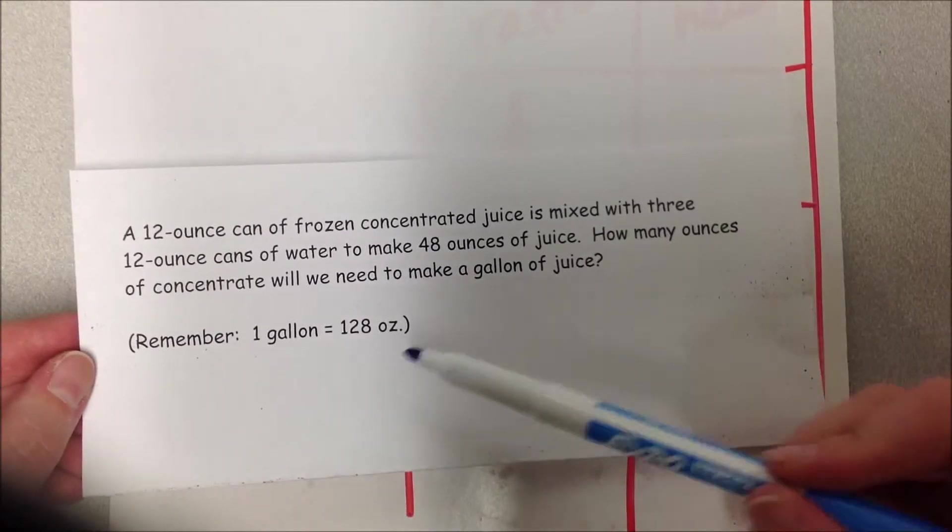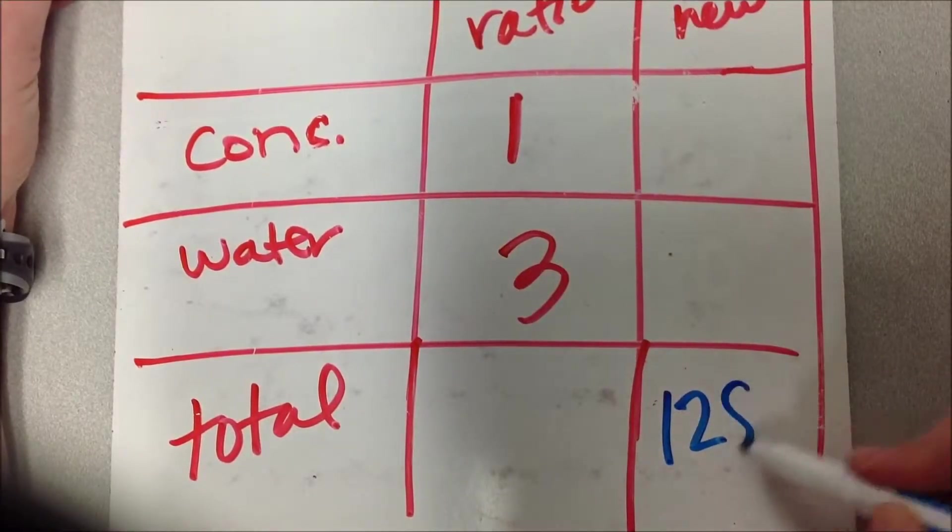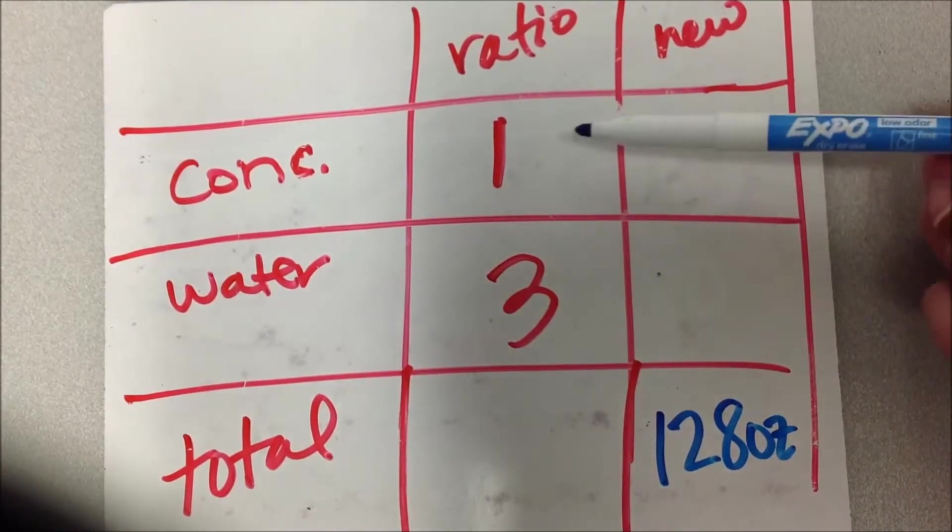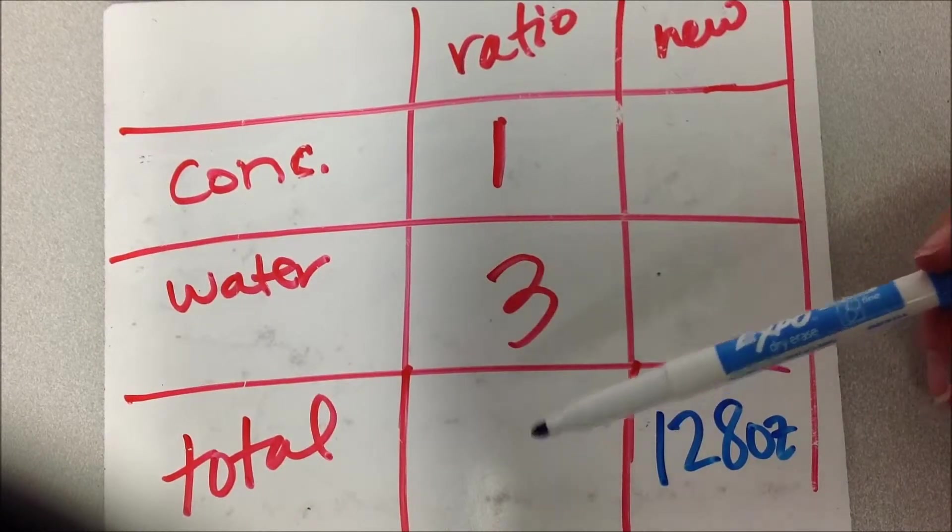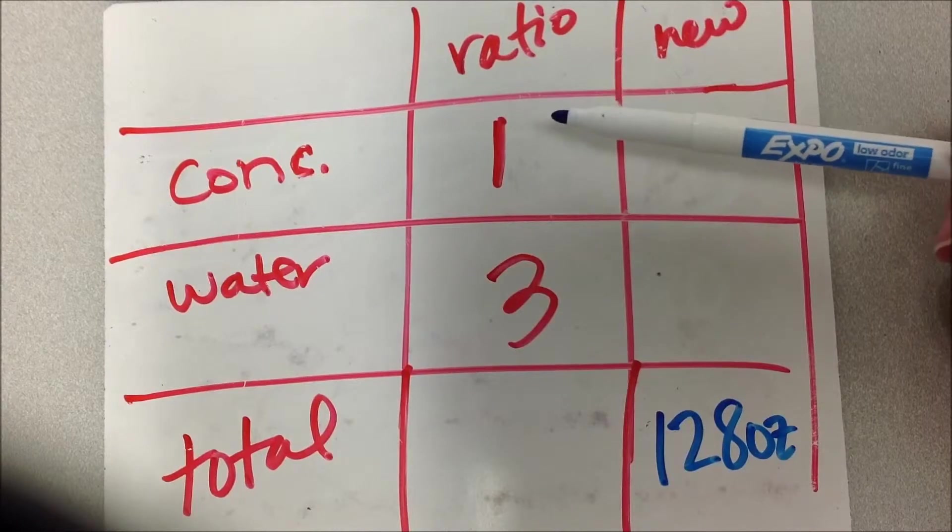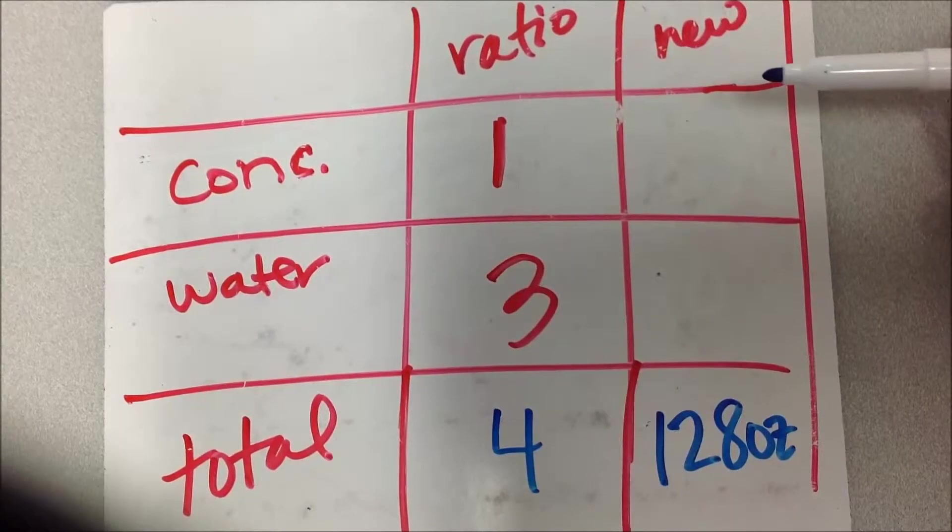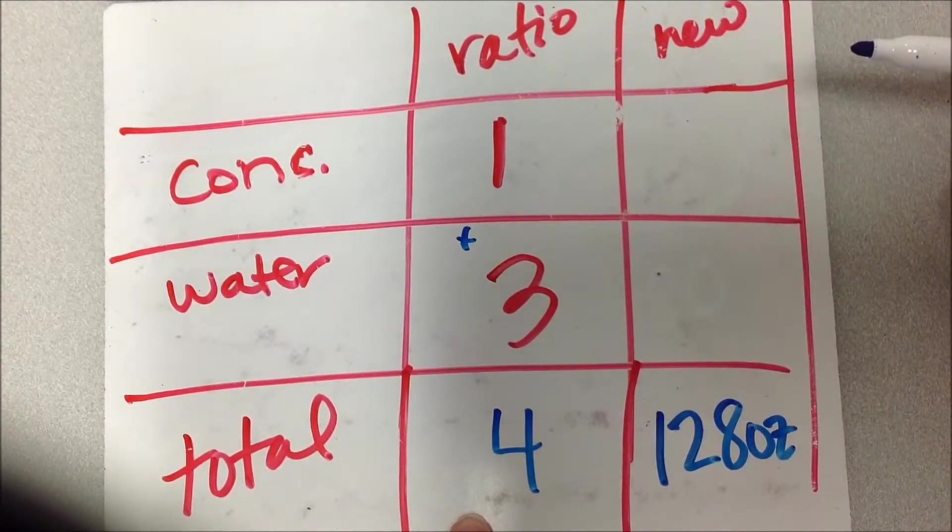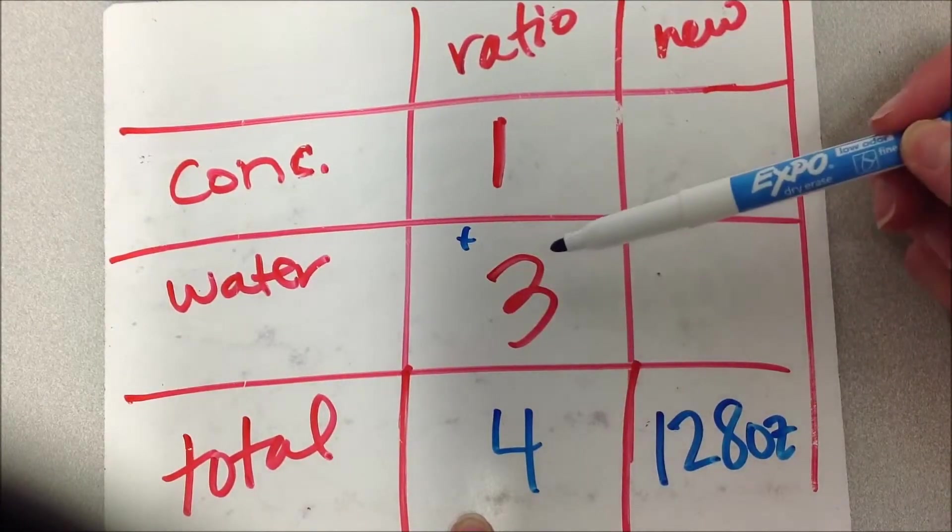So the 128 ounces, I'm going to end up writing it somewhere down here. And what they're really saying is they want it to be the total. Just like in the last example that we looked at, I don't have a ratio to the total. I only have a ratio to each other. But if I have 1 concentrate and 3 water, my total is actually going to be like four 12-ounce cans. So I can just add those two together...